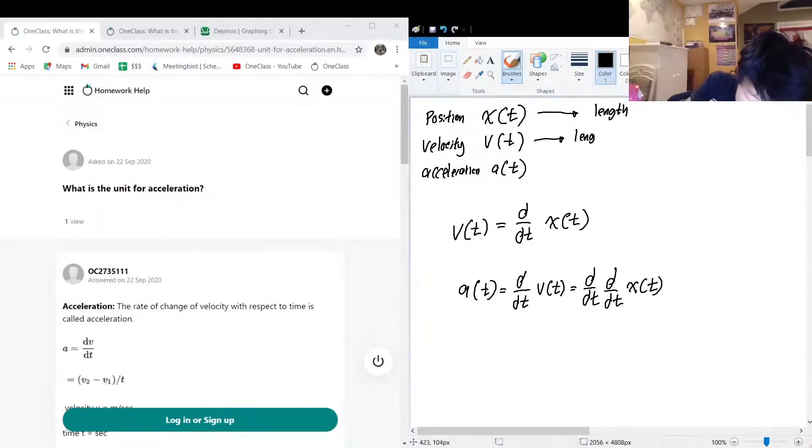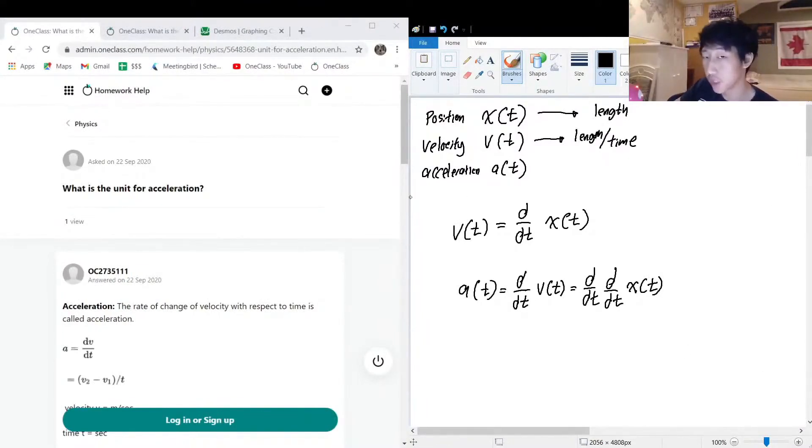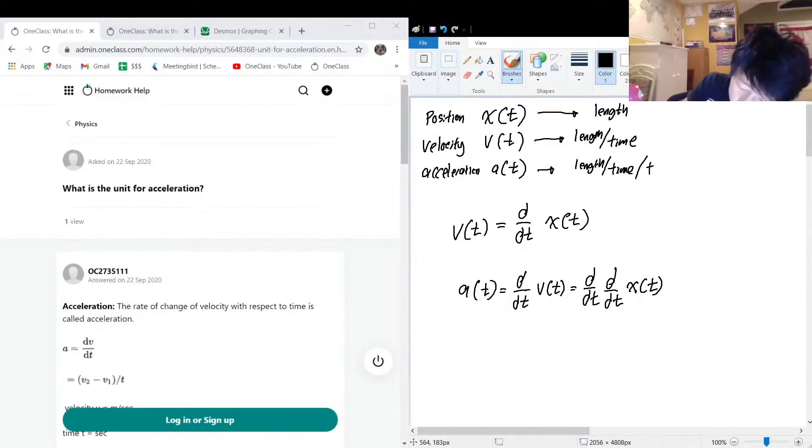And acceleration, since it's the second derivative of a position, will be length over time over time, which is equal to length over time squared.